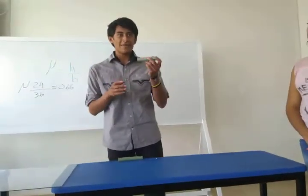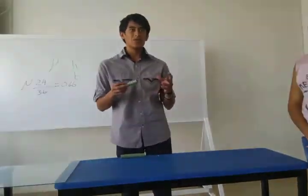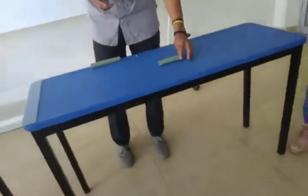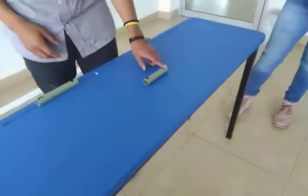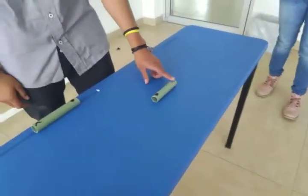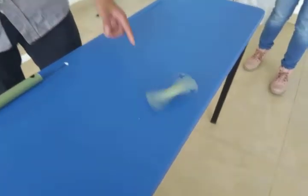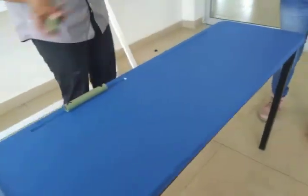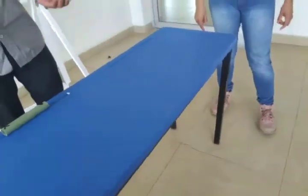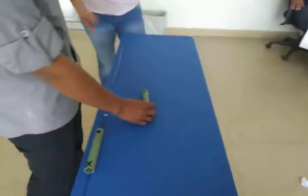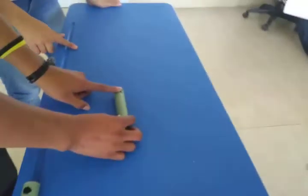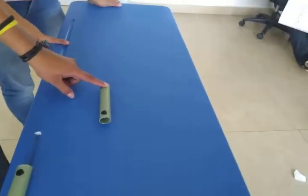I spin the tube. For example, if I put my finger on the X and spin, we can see only the X. If I put my finger on the X and spin, we can see only the X.